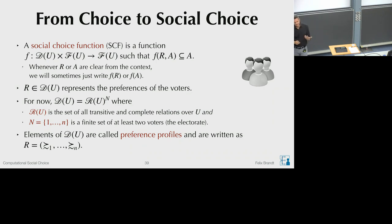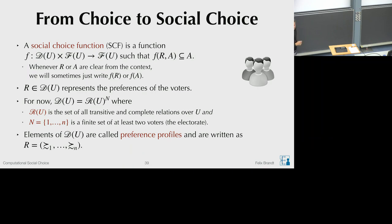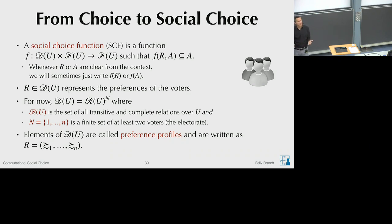Elements of D(U) are called preference profiles. Mathematically, they are functions mapping a voter to a preference relation, but it will be more convenient to write them as vectors—one preference relation per voter. The first input to a social choice function is therefore a preference profile; the second is a feasible set; and the function maps to a set of good alternatives, which can be thought of as the winners of a voting rule.